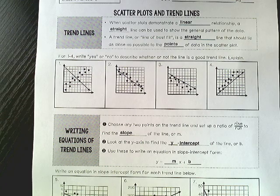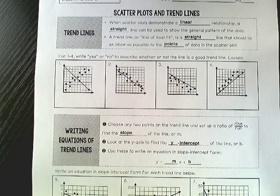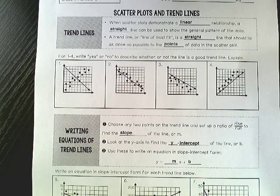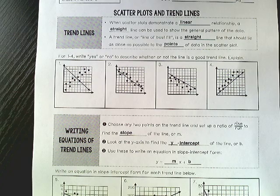We're going back to our knowledge of linear relationships, where y equals mx plus b. So when scatter plots demonstrate a linear relationship, a straight line can be used to show the general pattern of the data.